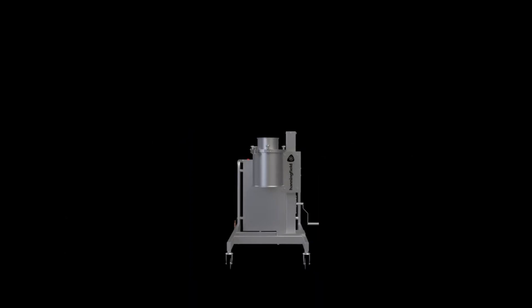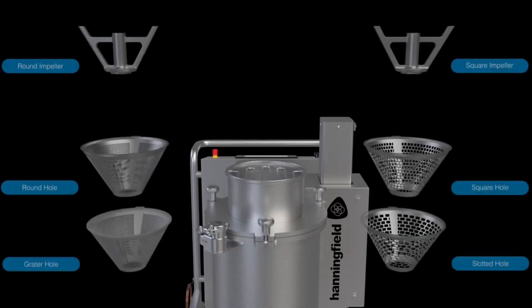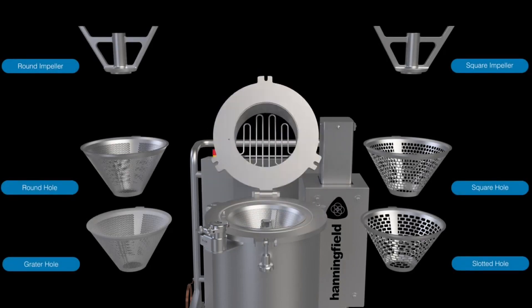The Hanningfield Unimill can be configured with a wide variety of screen meshes and impellers, allowing various particle size outputs to be achieved, typically in the range of 150 to 2000 microns.